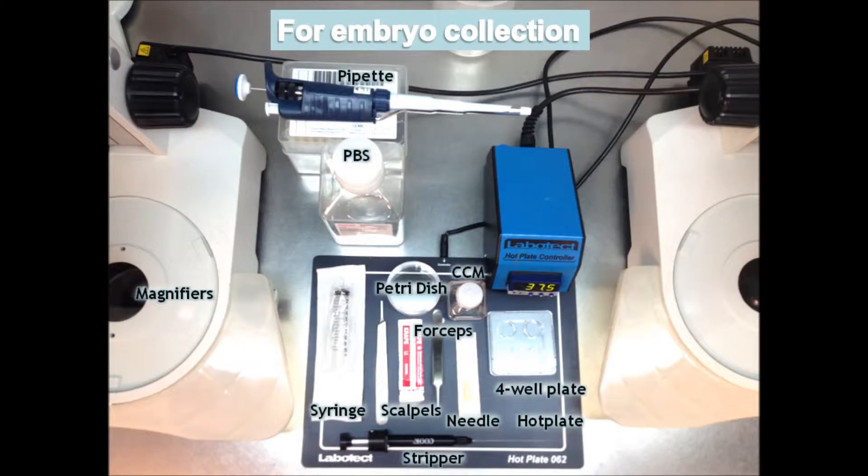To collect the embryos, we will need a dissection microscope, pipettes, PBS, syringe, scalpels, petri dishes, forceps, co-culture media, needles, a four-well plate and a hot plate set to 37 degrees.